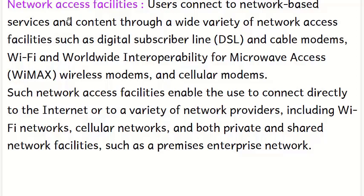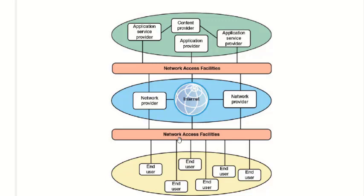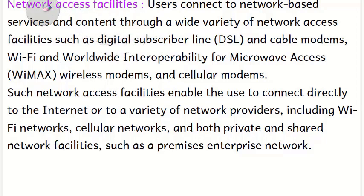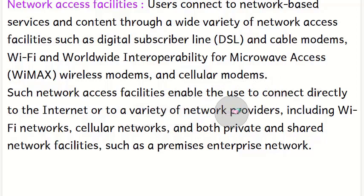Next is the network access facility. As you can see in the diagram, after the end user we have this network access facility. Using it, the user connects to network-based services and content through a wide variety of access technologies — DSL lines, cable modems, Wi-Fi, WiMAX, or cellular modems. These are the ways by which the user gets access to network facilities and connects to the internet.